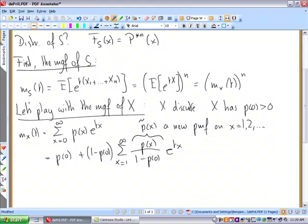So these are new probabilities. The sum of them is one. The only difference with the p(x), the original one, is that you don't have a mass at zero.